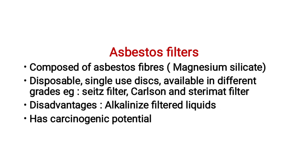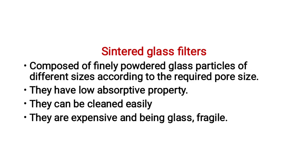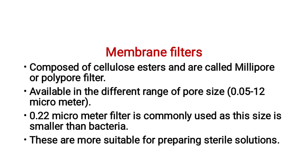Asbestos filters are composed of asbestos fibers (magnesium silicate) and are disposable, available as single-use discs in different grades — e.g., Seitz filter, Carlson, and Sterimatt filters. Disadvantages of asbestos filters include: they alkalinize filtered liquids and have carcinogenic potential. Sintered glass filters are composed of finely powdered glass particles of different sizes according to the required pore size; they have low absorptive properties, can be cleaned easily, but are expensive and fragile in nature.